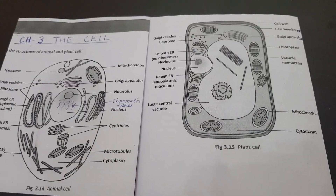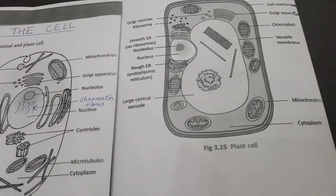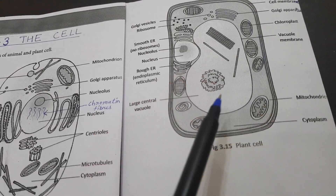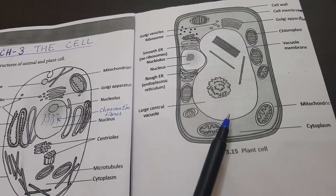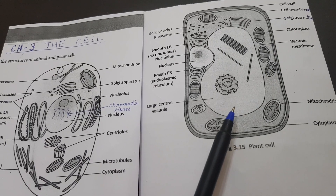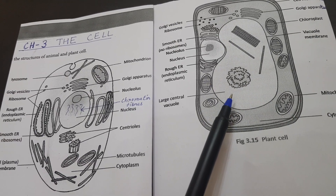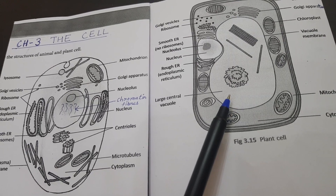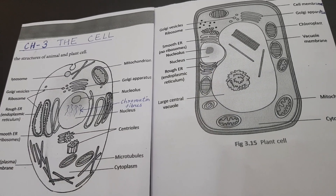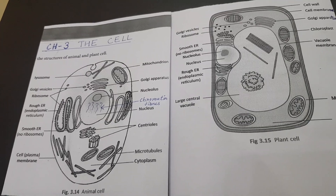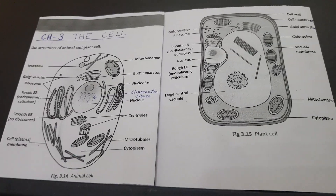Next we have the vacuole. In animal cells, if a vacuole is present, it is very small. But in plant cells, the vacuole is very large and located in the center. Vacuoles store various substances including waste products of the cell and generally contain water. In plant cells, the vacuole is filled with a liquid called cell sap, which contains dissolved sugars and salts. In the case of amoeba, the vacuoles contain food particles and are called food vacuoles.